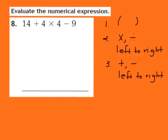So I'm going to move on to step number 2. Step 2 says multiply or divide from left to right, and there is multiplication in this expression. So I'm going to solve the multiplication first. I'm going to multiply 4 times 4, and that's going to give me 16. I'll bring down the rest of the problem: I now have 14 plus 16 minus 9.